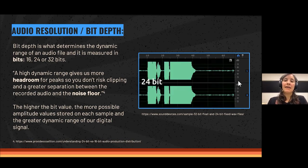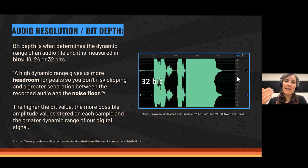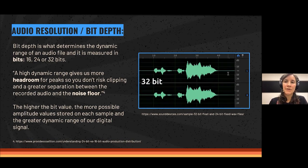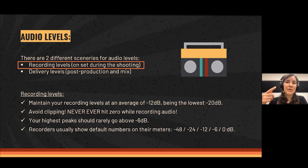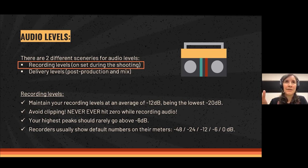I totally recommend recording in 32-bit — you have far more possibilities when working with amplitudes without as much noise or distortion. Now, something very important: audio levels. There are two different scenarios: recording levels, which is when you are on set during shooting, and delivery levels, which is after post-production when you mix and everything gets louder. For recording, levels need to be a little softer — usually at an average of minus 12 dB, with the lowest being minus 20, for dialogue and speech.